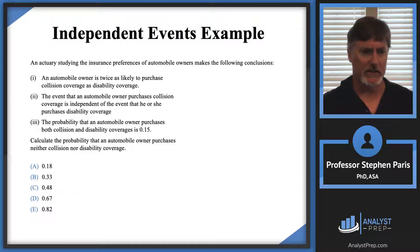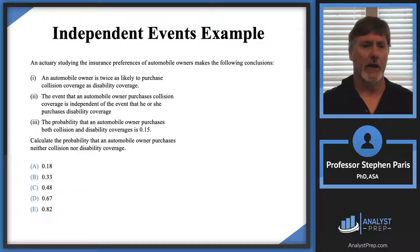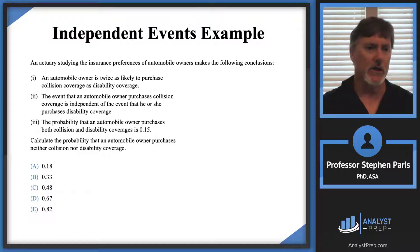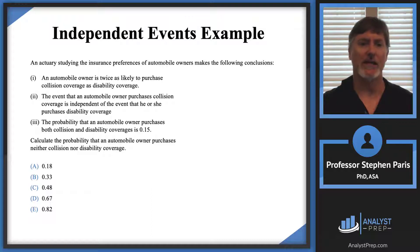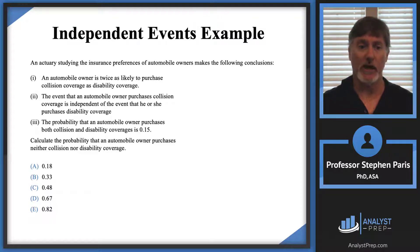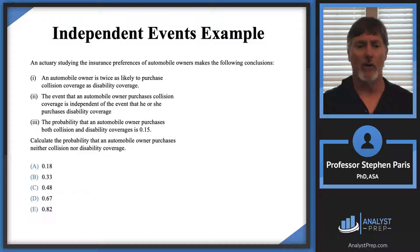The last sentence is: calculate the probability that an automobile owner purchases neither collision nor disability coverage. So then we go back and read the full question. An actuary studying the insurance preferences of automobile owners makes the following conclusions: an automobile owner is twice as likely to purchase collision coverage as disability coverage; the event that an automobile owner purchases collision coverage is independent of the event that he or she purchases disability coverage; and the probability that an automobile owner purchases both collision and disability coverages is 15%. We're looking for the probability that an automobile owner purchases neither collision nor disability coverages.